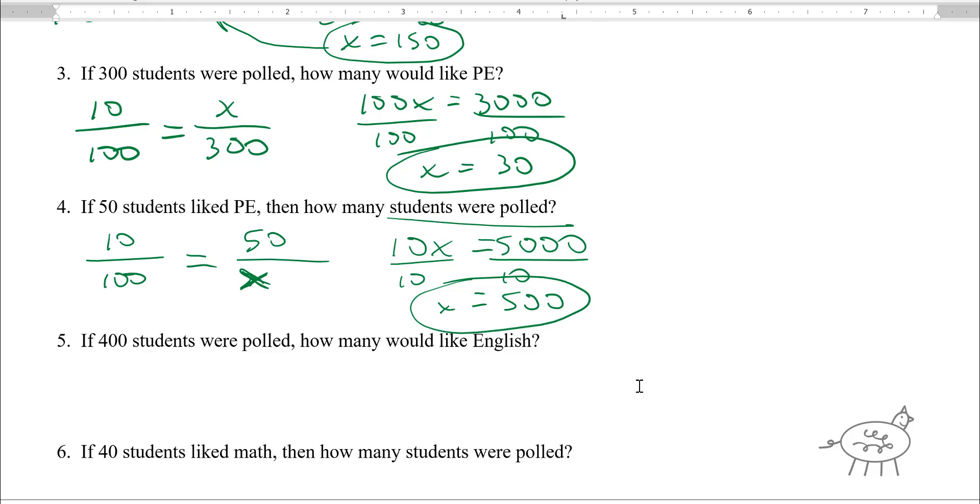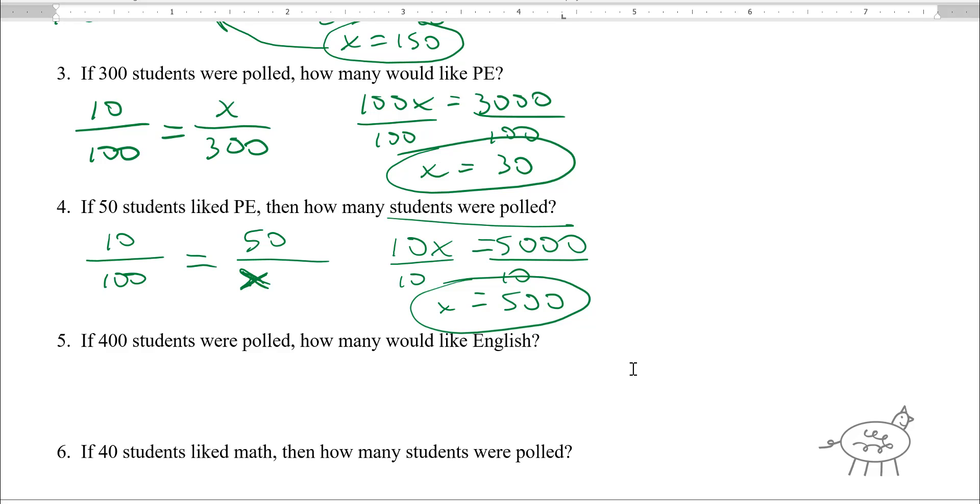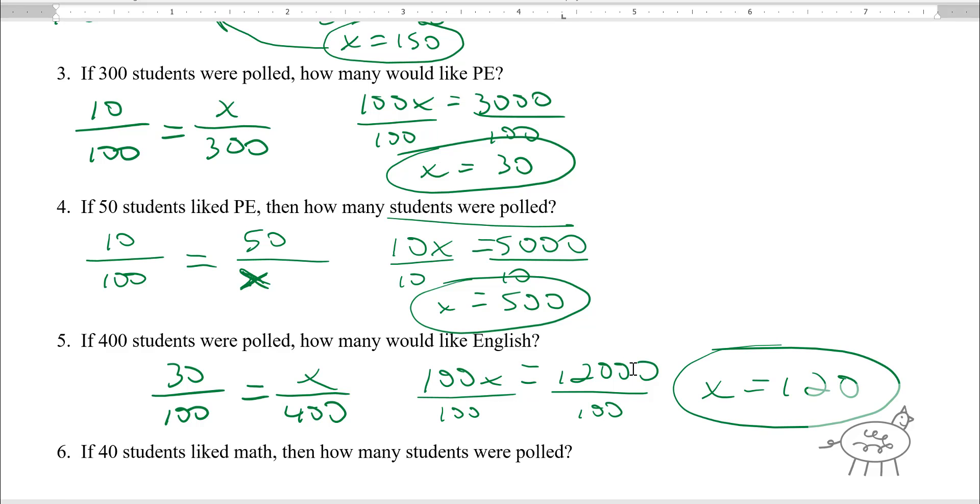Two more. 400 people polled, English. English is 30 over 100, so 30 over 100, and 400 were polled. I wonder how many like English, so that's my small number on top. We have 100x equals 12,000. Using your calculator, divide by 100, so x is equal to 120.